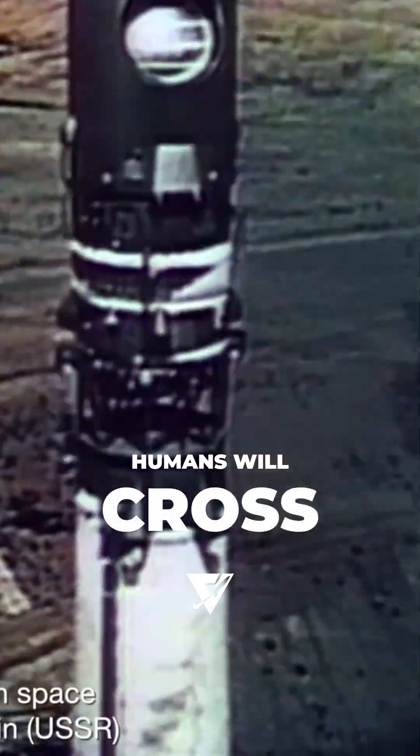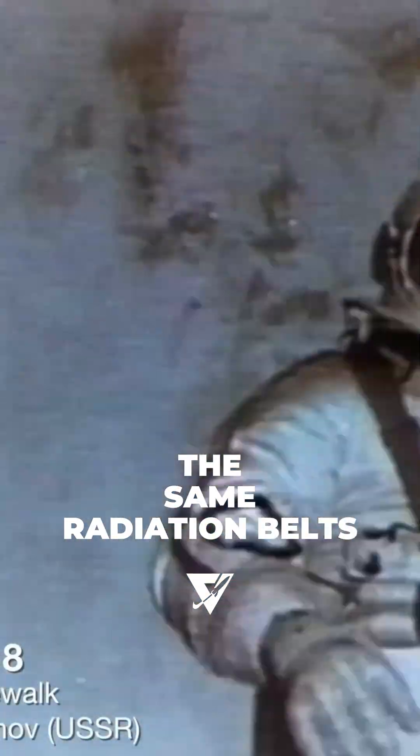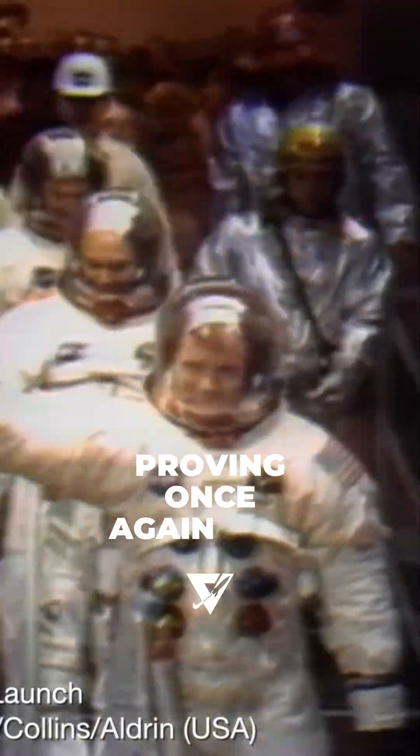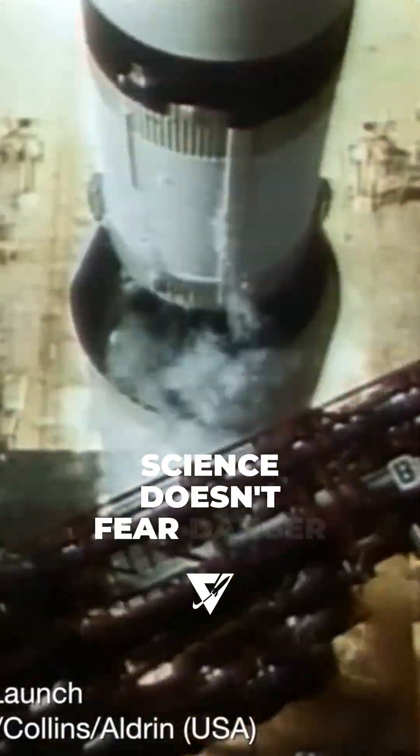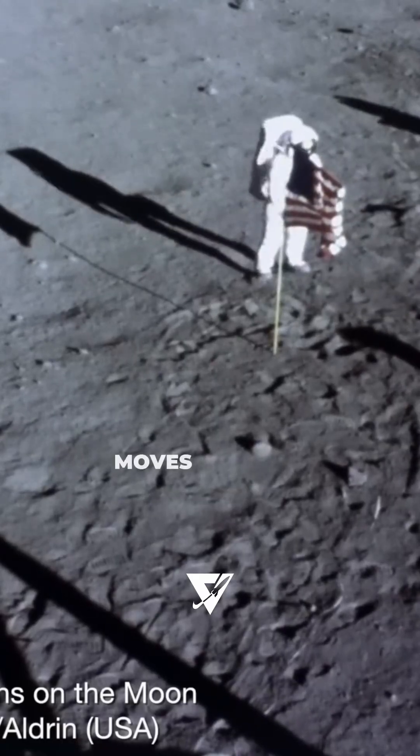Humans crossed them before. Humans will cross them again. And the next time we head to the moon or Mars, we'll pass through the same radiation belts that sparked decades of conspiracy. Proving once again that science doesn't fear danger. It studies it, plans for it, and moves through it.